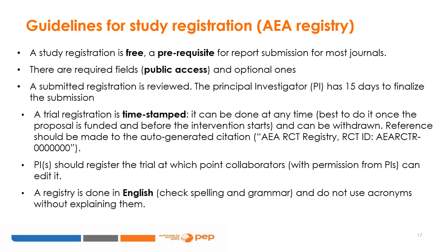A study registration is free. It is a prerequisite for report submission for most journals. There are required fields that are public access and optional ones that may be hidden from the public but obtained upon request. The submitted registration is reviewed — this review process is a very light one, only meant to check that the required information is provided. The registry will be made by the principal investigator, PI, who has 15 days to finalize the submission after the review. PIs should register the trial, and collaborators with permission from PIs can then edit it.